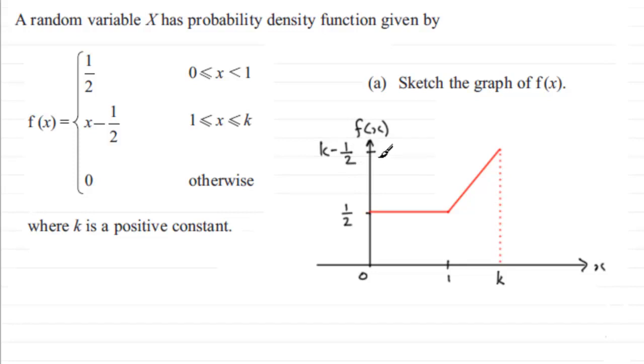The other thing is, it is 0 otherwise. So I would want to draw my line along there and along there for 0 otherwise. So that's the kind of thing I would draw for a sketch of the probability density function f(x).